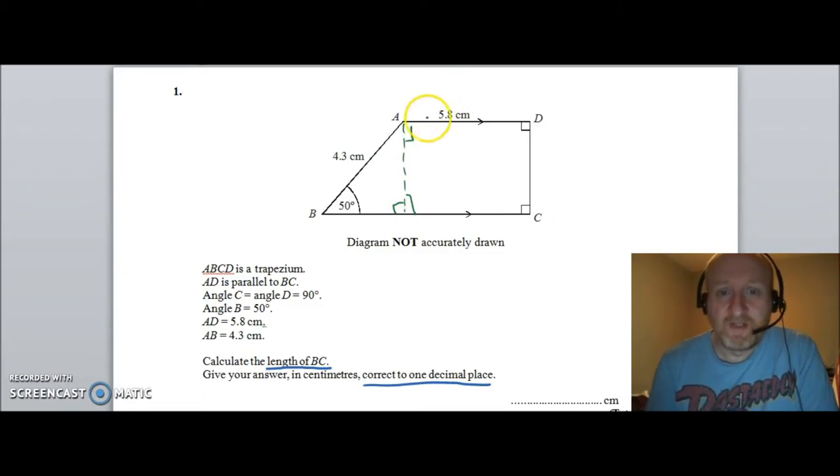I also know that because this length here is 5.8 then that must mean that this length here between here and here is also 5.8 as well. Now I'm after the length BC all along here so in fact all I've left to do is get that length there.